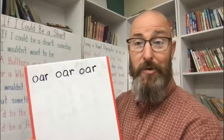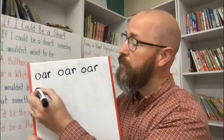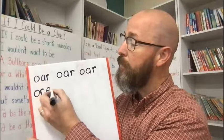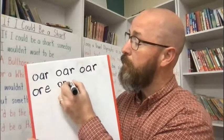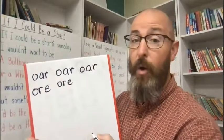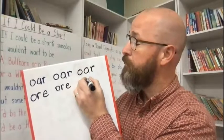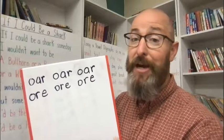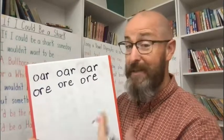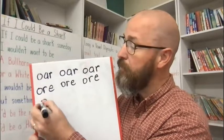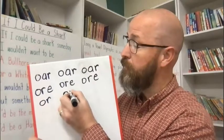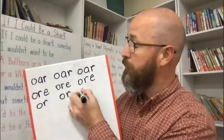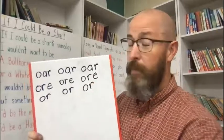Next let's do O-R-E. Write it three times and say 'or' — or, or, or. Then let's do the other 'or' spelling, O-R. Write that one three times as well — or, or, or.